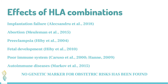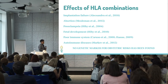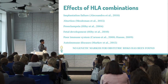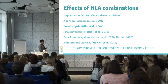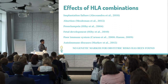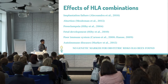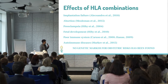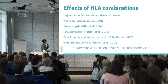There is evidence in the literature that allele combinations have an influence on the outcome of pregnancy. For example, implantation failure, abortion, preeclampsia, fetal development, the immune system of the baby, and autoimmune diseases of the baby.